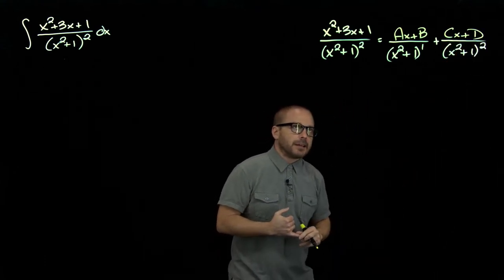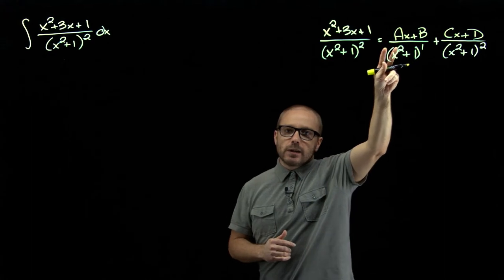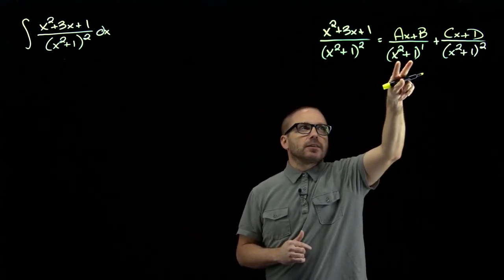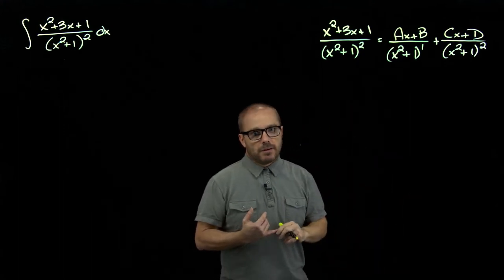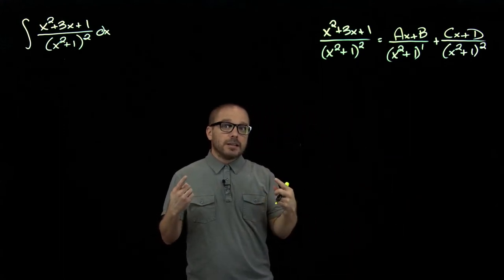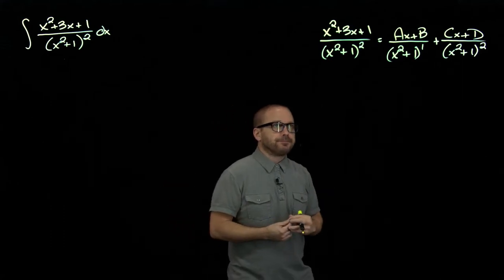And the idea being, that's the most general thing we could write and still be proper in terms of that factor. It's a second degree factor, so one degree less would be a first degree expression. With first degree factors, we go one degree less to a constant, zero degree.